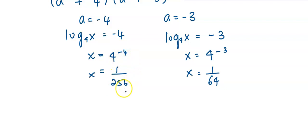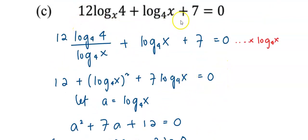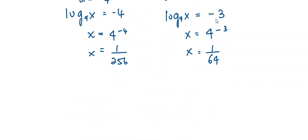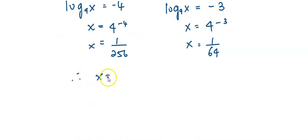Put 1 over 256 into the original equation and put 1 over 64 into the original equation to check whether these two solutions satisfy the equation. Substitute each value into x one by one and calculate with your calculator. Check whether the left-hand side equals 0. Both solutions give left-hand side equal to 0. So we accept both solutions: x equals 1 over 256 or x equals 1 over 64.